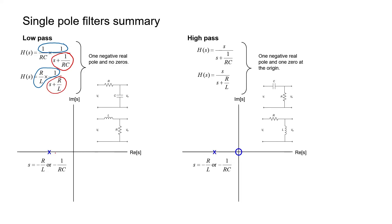These pole-zero diagrams are useful for understanding a filter's behavior by inspection — especially for higher-order filters. For the high-pass filters, the numerator contains an S. Setting the numerator equal to zero gives S = 0, which lies right at the origin of the complex plane — we mark it with a circle. We get the same solution for both the RC and LR high-pass filters. These two filters each have a single zero at the origin and a single pole at the same location as in the low-pass case. So the difference between a low-pass and a high-pass filter is: a low-pass has a pole and no zero, while a high-pass has both a zero at the origin and a pole.